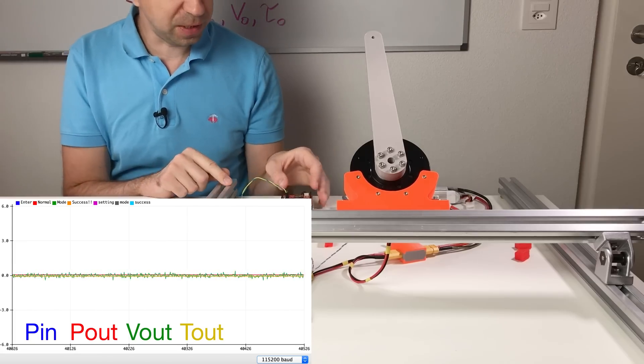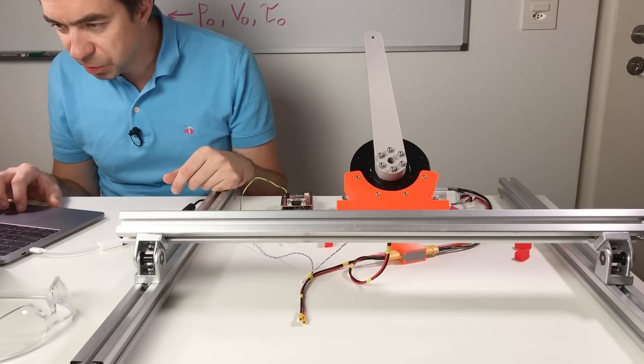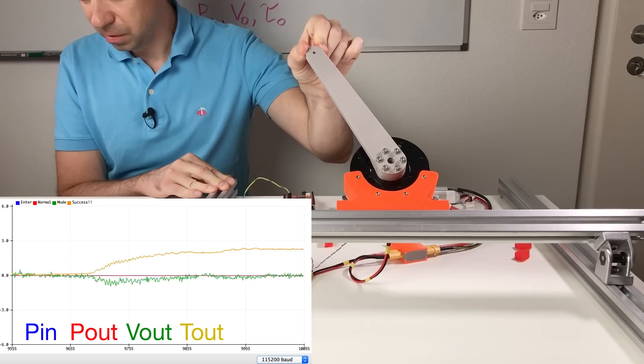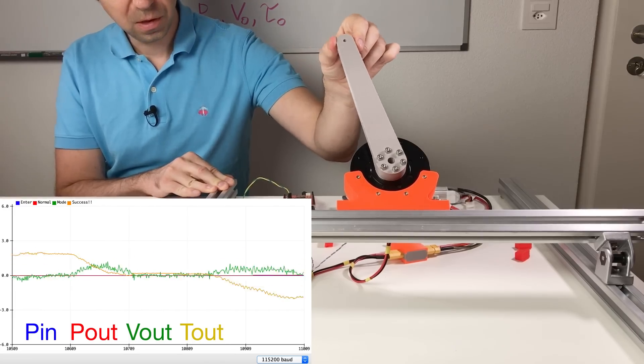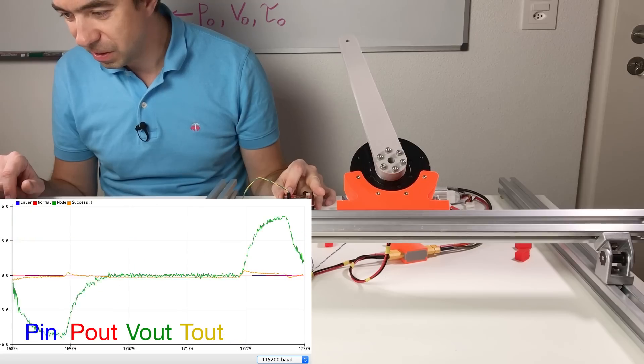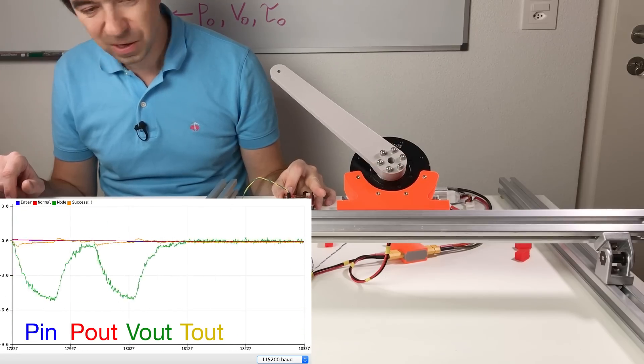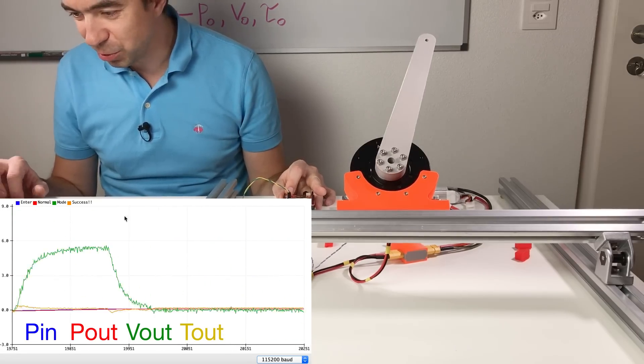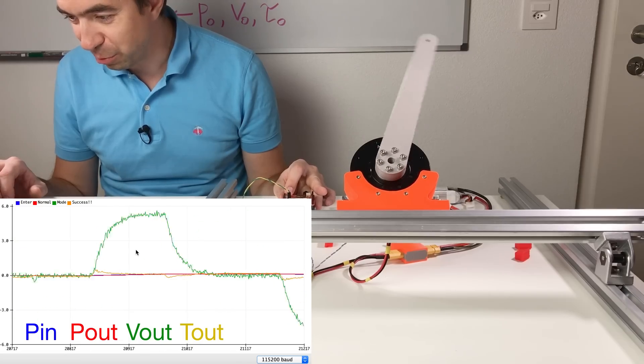Now we're going to decrease the stiffness. So instead of 100 I'm going to put the stiffness 20. Now it's way easier to move it. And also you see that the acceleration profile changed.